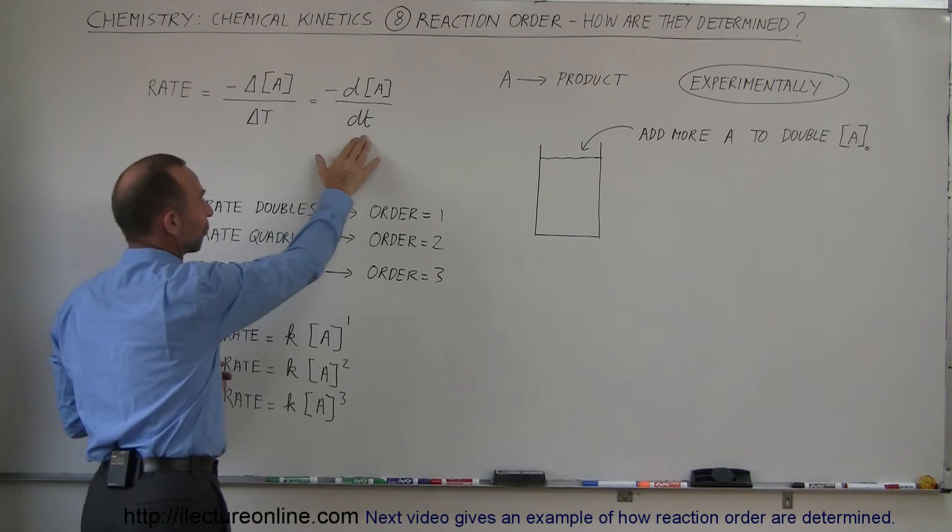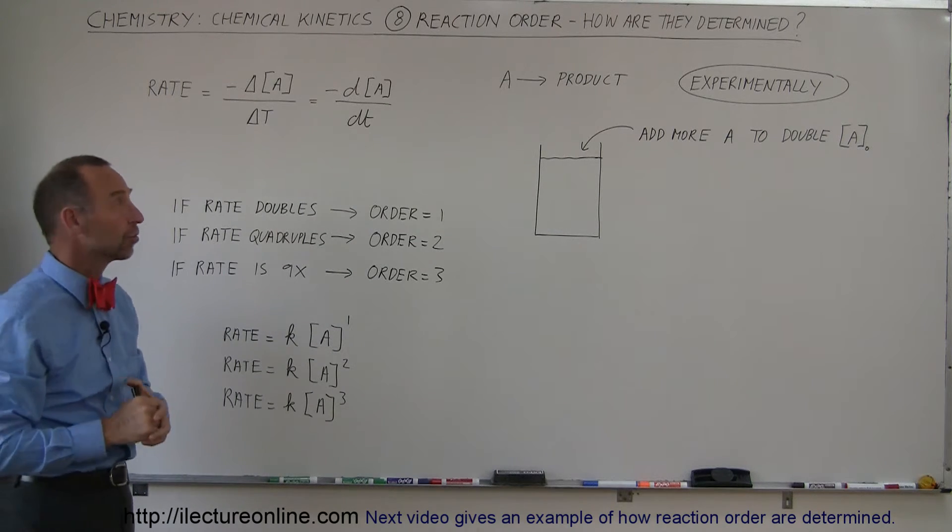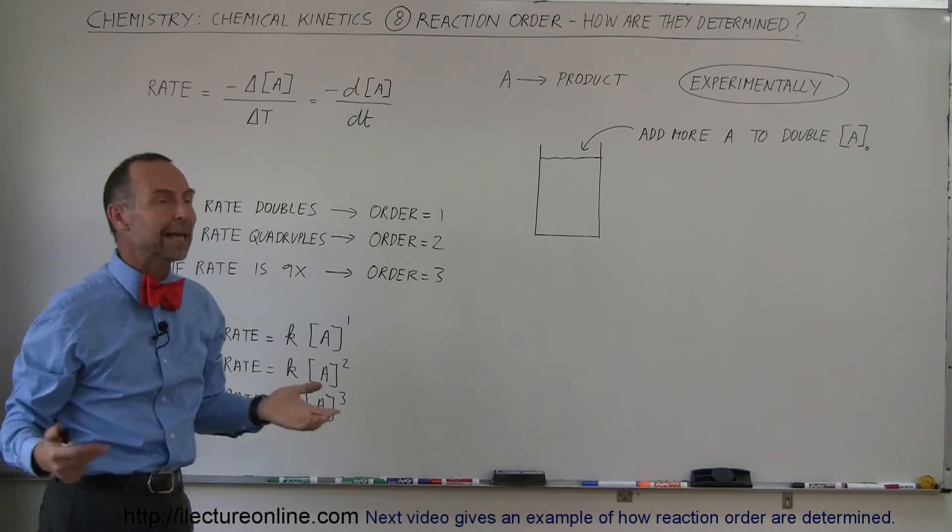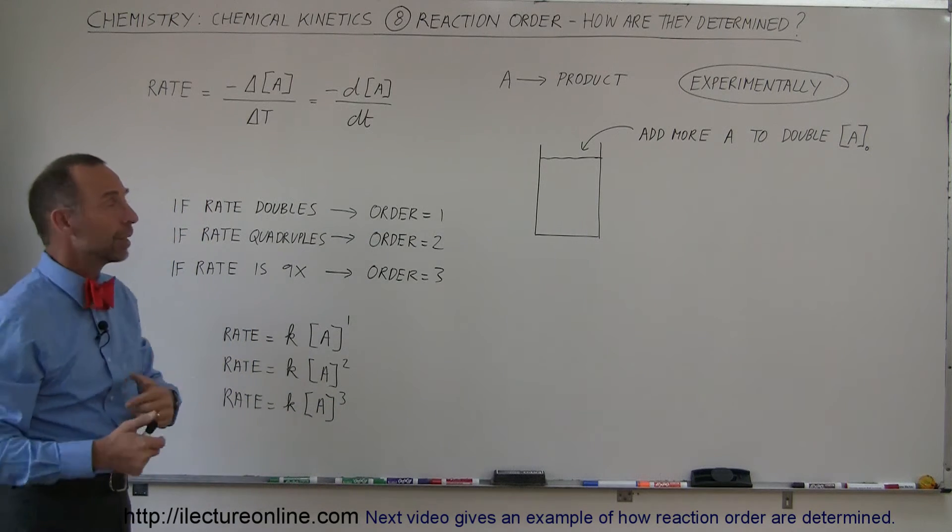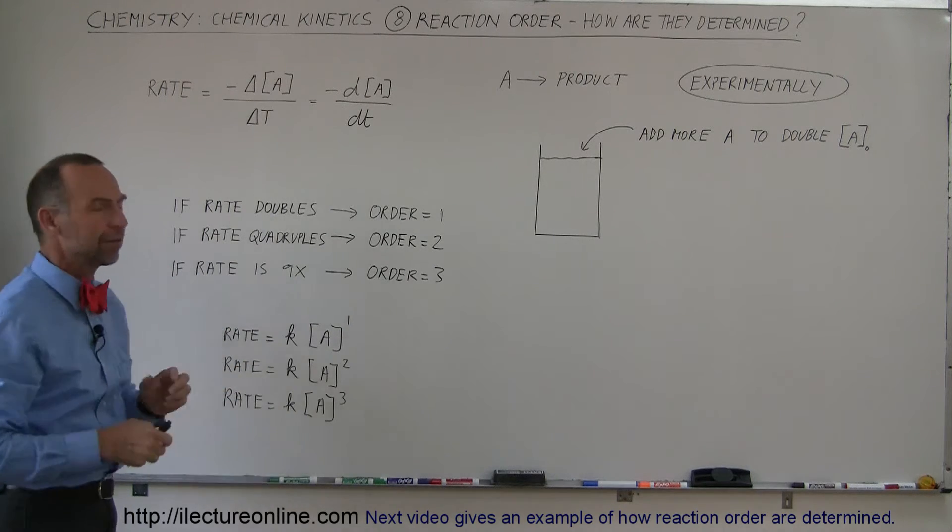So it's simply the rate of change of the concentration of reactant A in this case. It's negative because the slope is negative, and we want to account for that so that the actual rate will be positive.